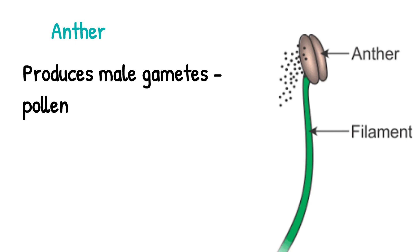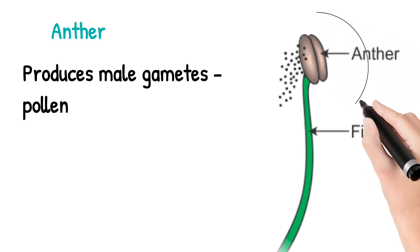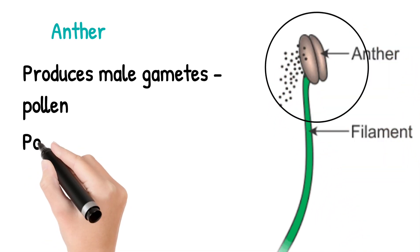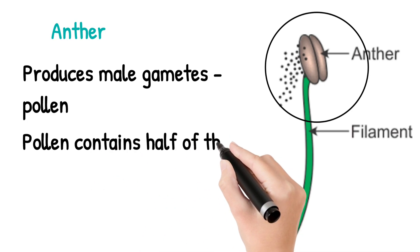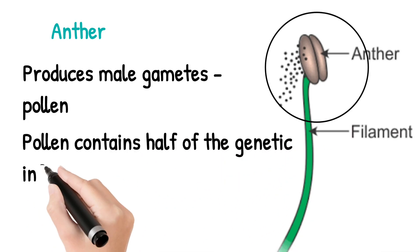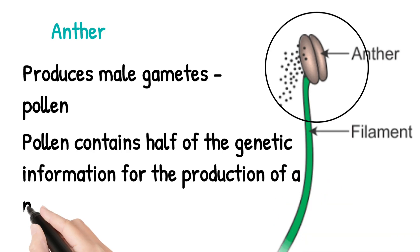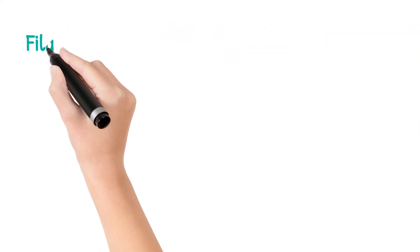The anther helps to produce male gametes called pollen. You can see the picture — the anther is situated above the filament, and you can also see some of the pollen. Pollen contains half of the genetic information for the production of new plants.